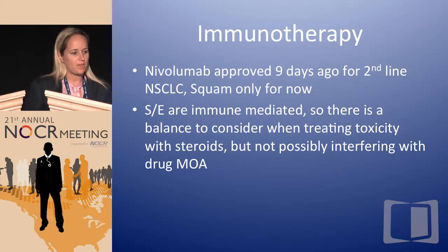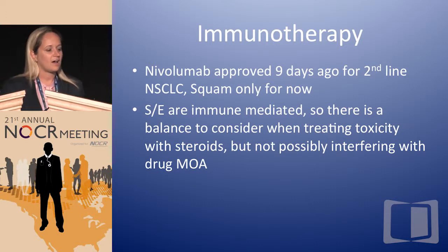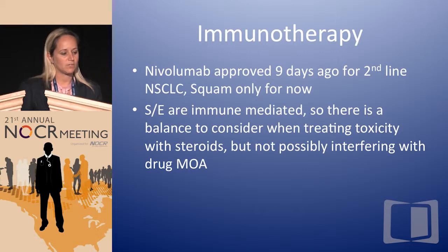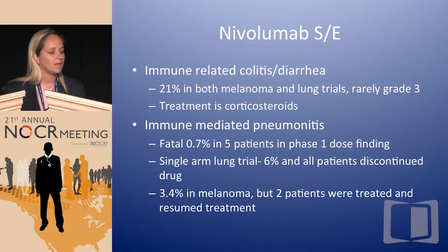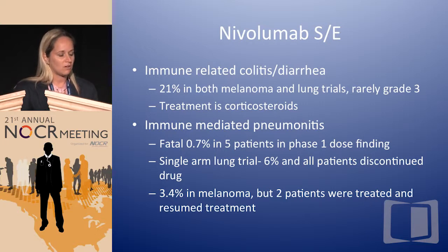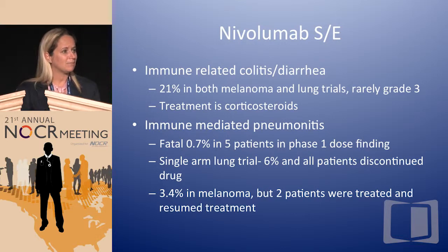Moving on to immunotherapies. Nivolumab was approved nine days ago for second-line non-small cell squamous lung cancer. There are toxicities — most aren't grade 3 or 4, but they still exist. These are immune-mediated toxicities, so you have to balance giving steroids because steroids are almost always the treatment, but you don't want to counteract the efficacy of the drug. Immune-related colitis or diarrhea occurred in 21% of patients in both the melanoma and lung trials for nivolumab — very rarely grade 3. Treatment is corticosteroids, not Imodium.